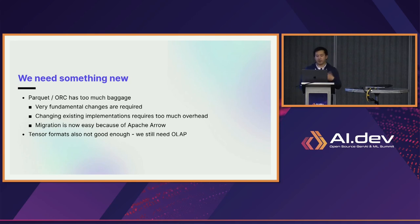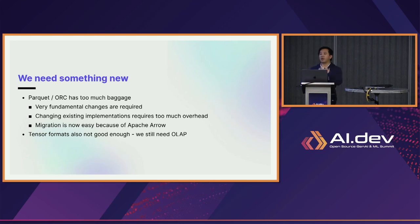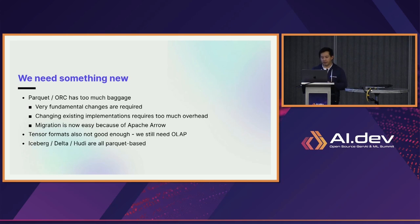Tensor formats like TFRecords are also not very good. They're optimized for tensor storage and training, but with AI we still need OLAP-type queries. If you have a large number of tensors or images, in order to do training you also need to do filtering and sampling — things that tensor formats are not very good at.